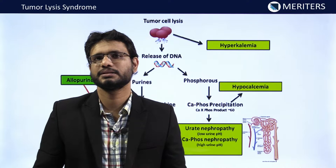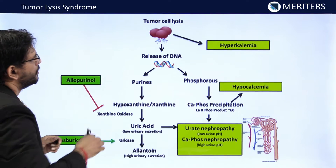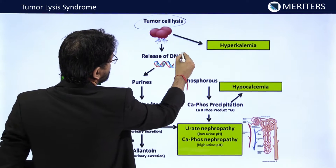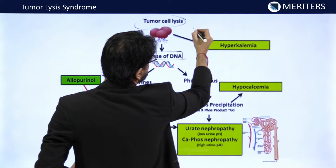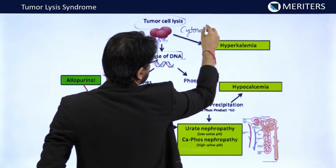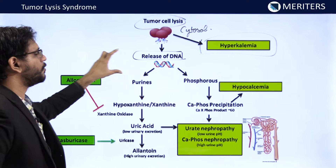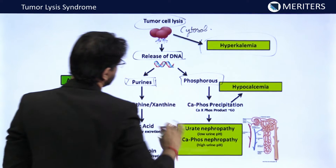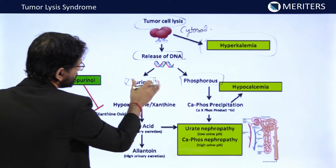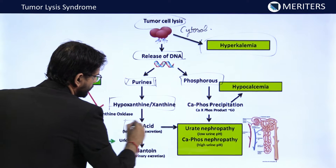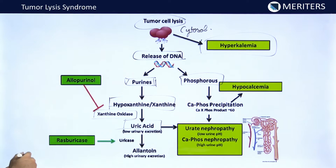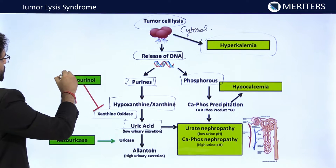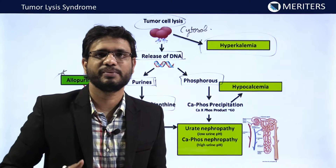After chemotherapy, tumor cells of hematological origin undergo lysis, releasing DNA and cytosol. The cytosol leads to hyperkalemia. The DNA releases purines, which are converted to hypoxanthine or xanthine. These are then converted to uric acid by the enzyme xanthine oxidase. Allopurinol can be administered to inhibit xanthine oxidase and thereby check the increasing formation of uric acid in the blood.